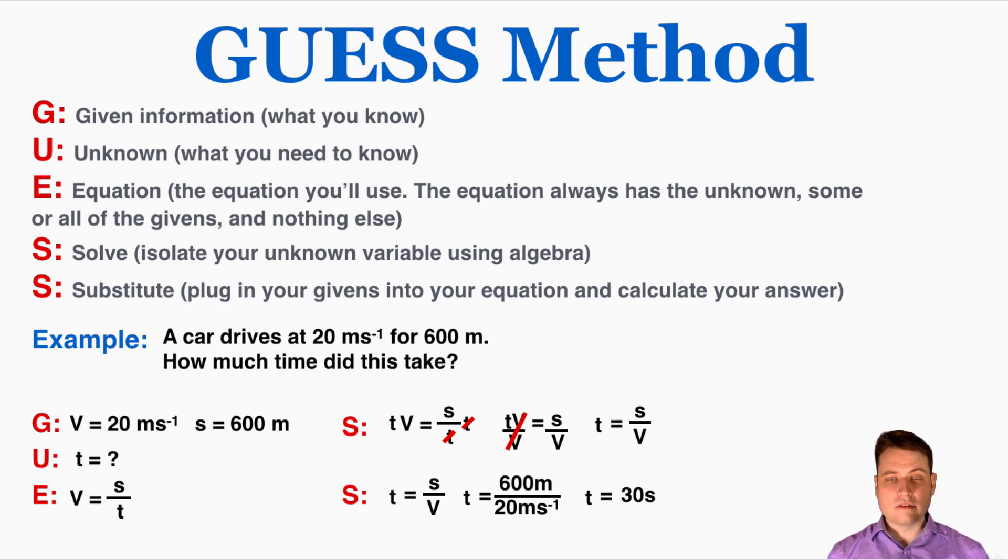So one more time, in given information you write down all the variables that you're given and say variable is equal to this, and the reason why you're writing the variables as well as their values, is that you want to use those variables to identify your equation later. After you write down your givens, write down your unknown variable and say this variable is equal to question mark. Next, identify the equation using your givens and your unknowns.